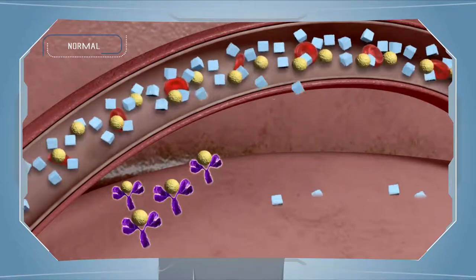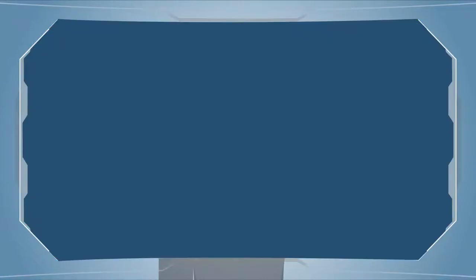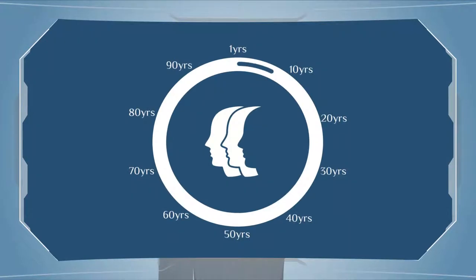Type 2 diabetes can occur at any age but is more prominent with humans who are above the age of 40 years.